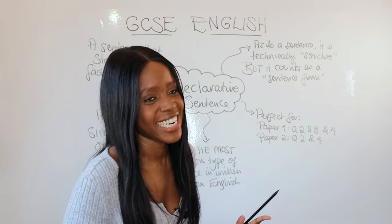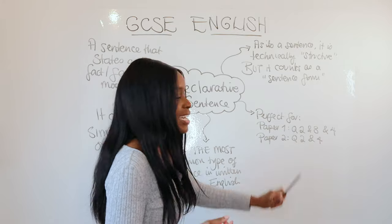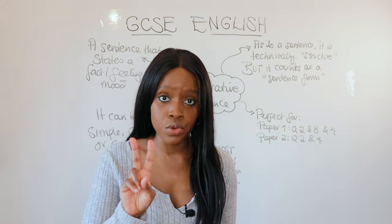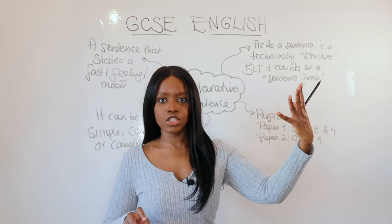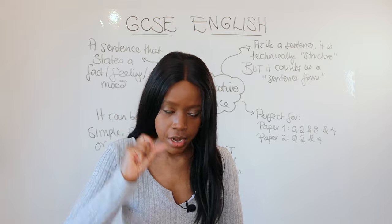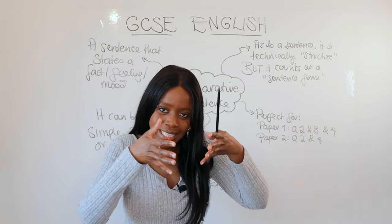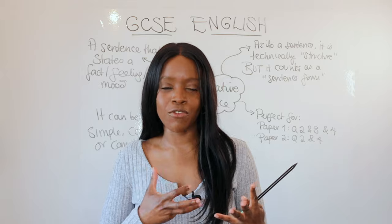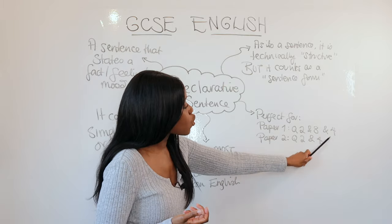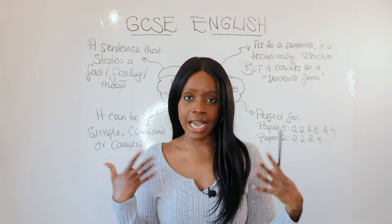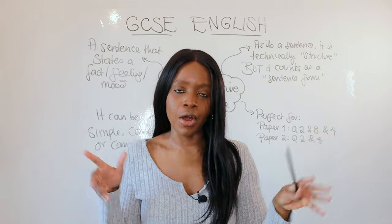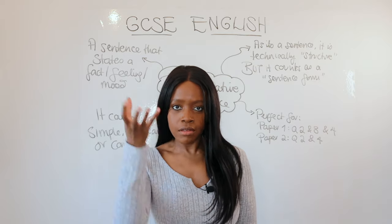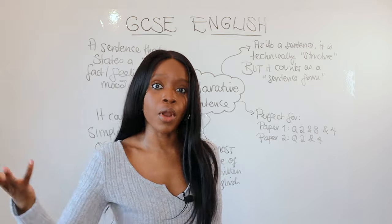This technique is especially perfect for Language Paper 1. For question two — the sentence form question, where you're asked how the writer uses language — you've got a third bullet point on sentence form, so you just literally insert 'declarative sentence' into that response. It's also perfect for question three, because it is a sentence type so you're automatically answering structure. And for question four — the student statement question — you simply say 'the writer in this declarative sentence illustrates blah blah blah.'